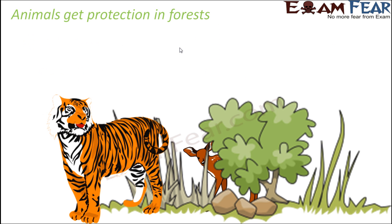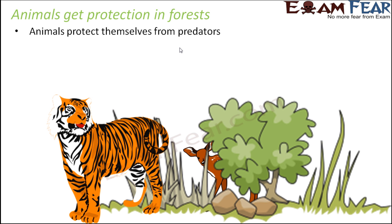Let us see how animals are protected in forests, looking at the tiger and deer relationship. Every animal tries to protect itself because it does not want to be killed and eaten. The tiger's aim is to catch prey and eat it, so it has certain adaptations within its body for that purpose.